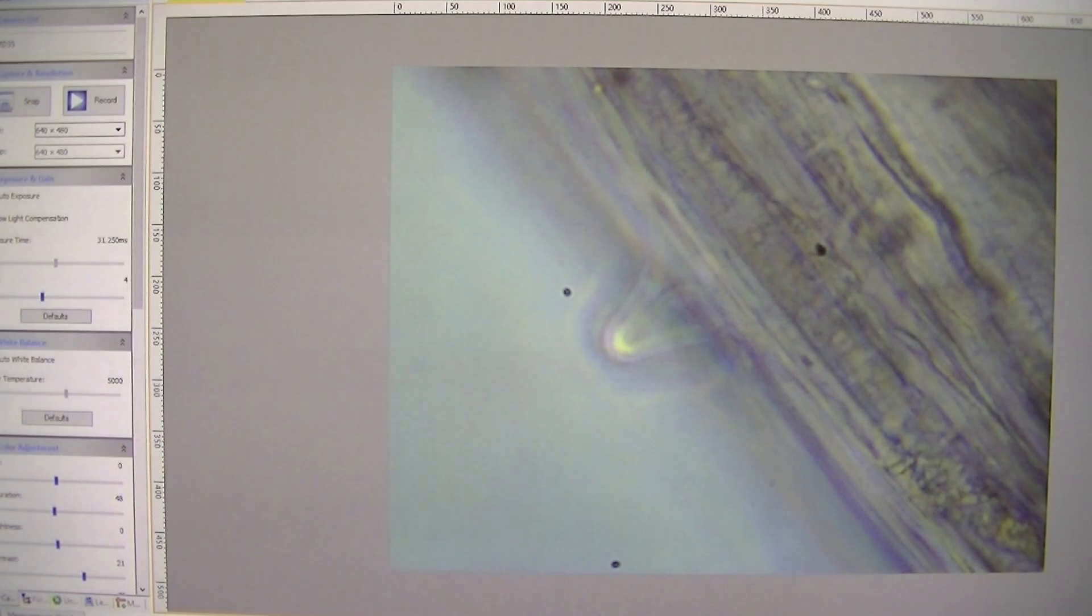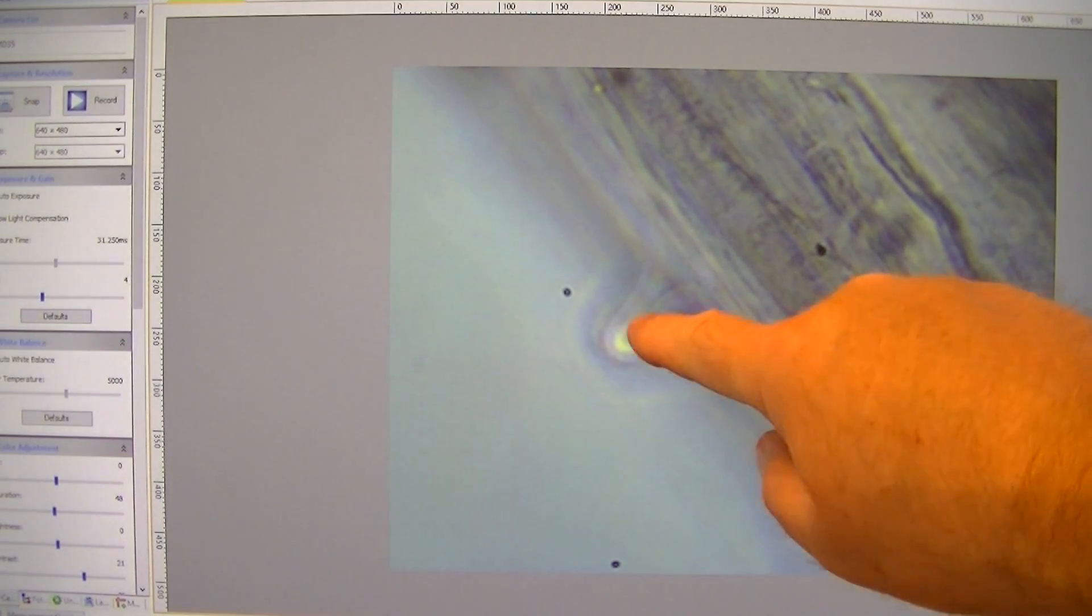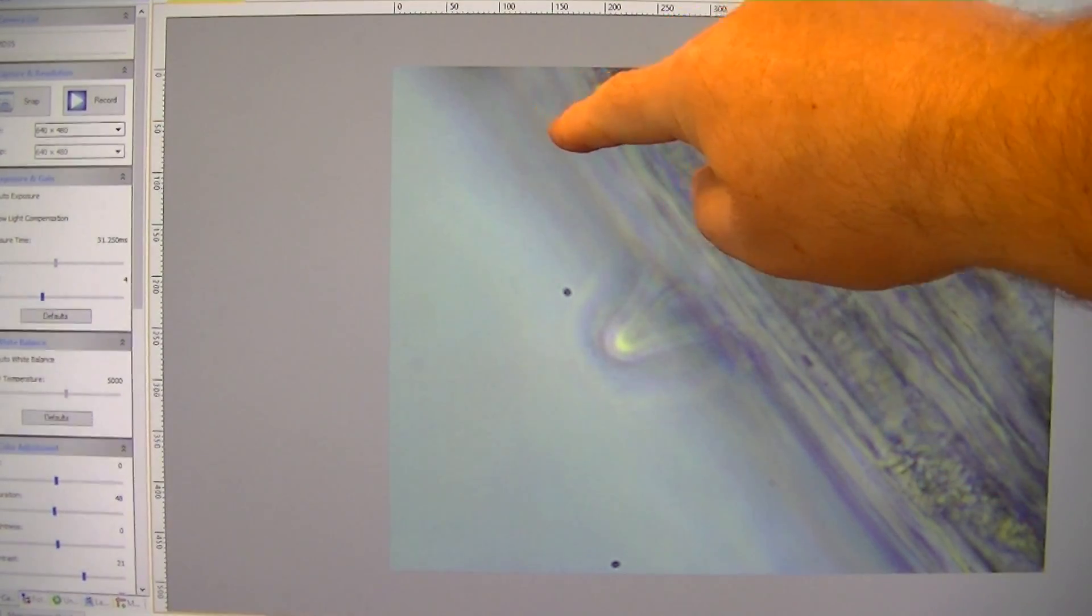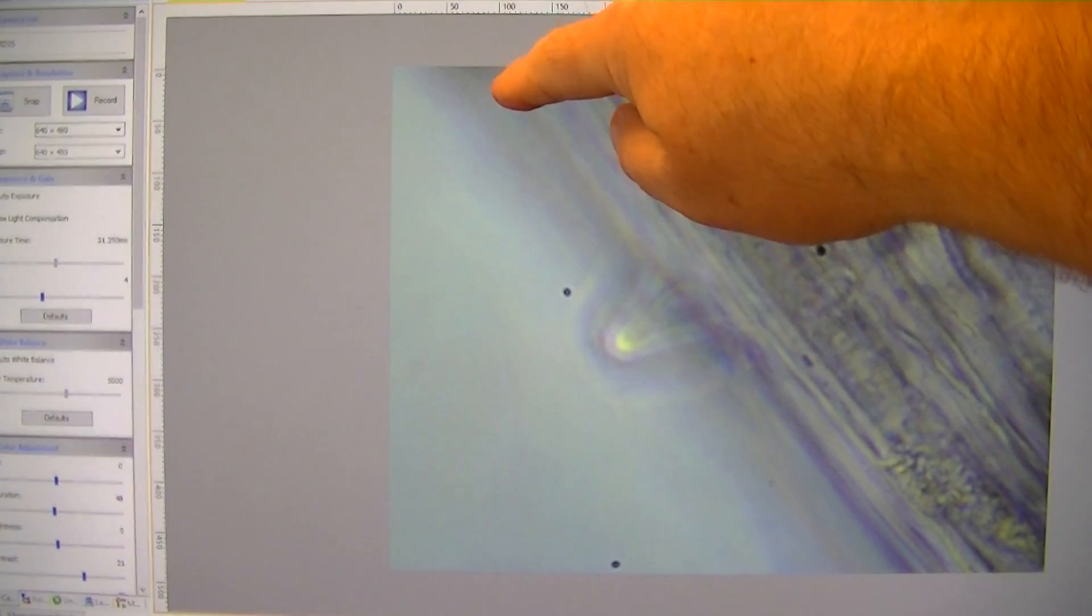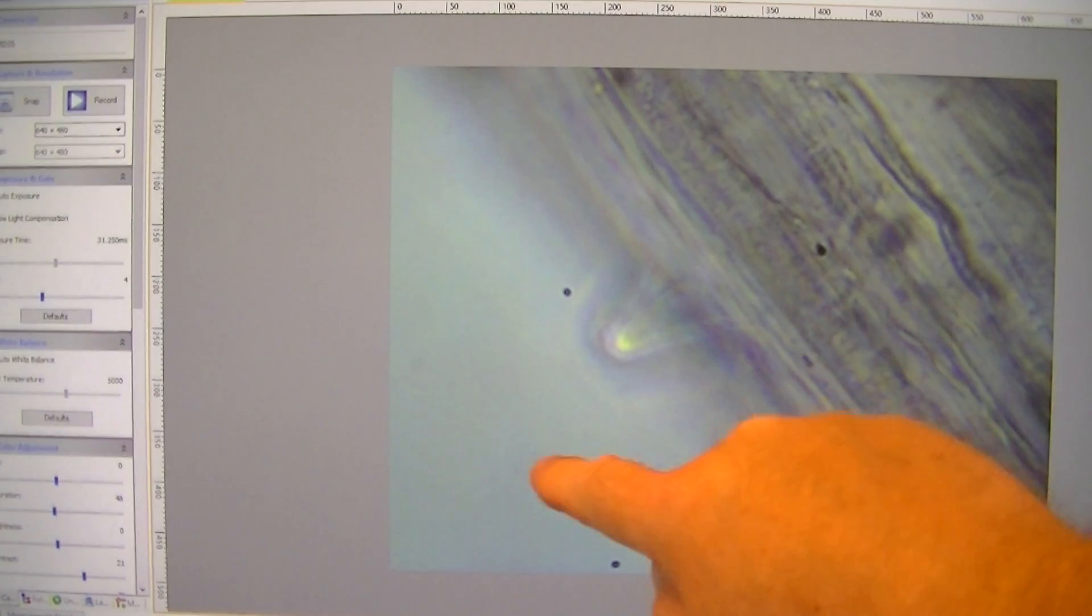Now, another fun fact about this is that this root hair here, if there's another one growing here, this will produce also a chemical reaction to kill this one off so there's distance between each one.